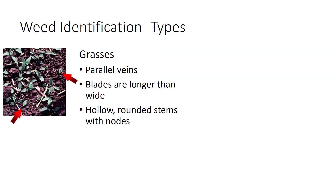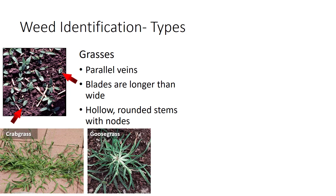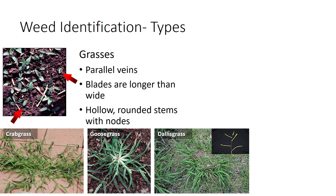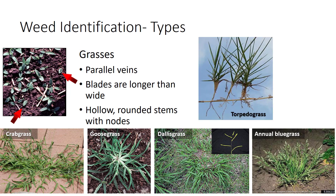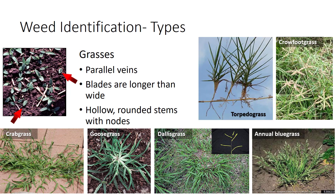Grasses are monocotyledonous plants that have only one cotyledon, or seed leaf, present when seedlings emerge from the soil. Grasses have hollow, rounded stems with nodes, or joints, and parallel veins in their true leaves. Examples include crabgrass, goosegrass, Dallas grass, annual bluegrass, torpedo grass, and crawfoot grass.